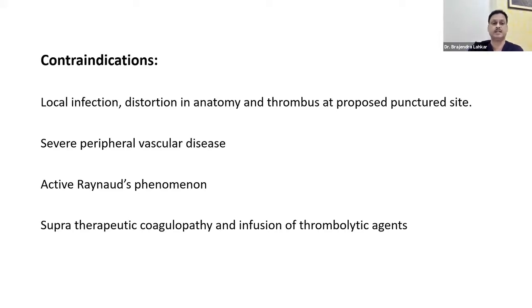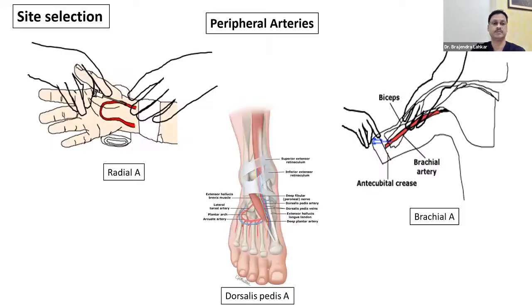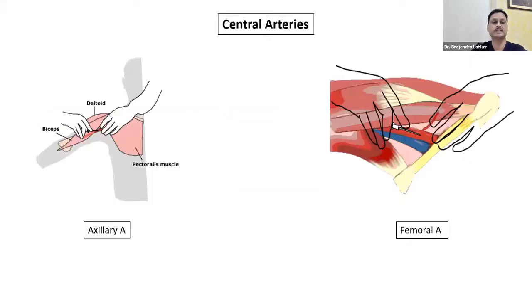Contraindications for arterial line include local infection, anatomic distortion, thrombus at the proposed site, severe peripheral vascular disease where cannulation is dangerous, raynaud's disease with vessel spasm risk, supratherapeutic coagulopathy, and use of thrombolytics. Unlike central venous lines, we may avoid arterial lines if coagulopathy is present — because the arterial line is only for monitoring, not for injecting medicine. It should be clearly remembered: never inject medication through an arterial line. Site selection: most commonly radial artery, also dorsal pedis and brachial arteries for peripheral access; femoral and axillary arteries for central access. In children, femoral or dorsal pedis is preferred.